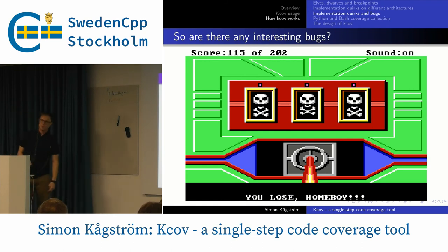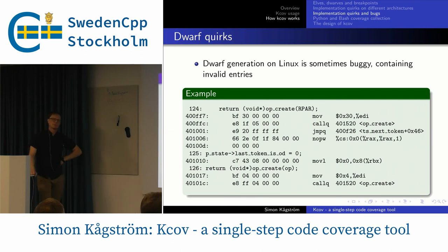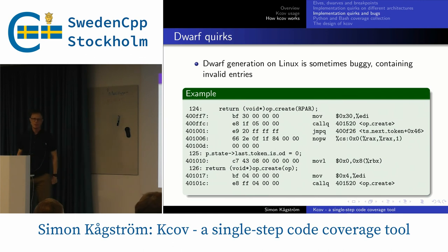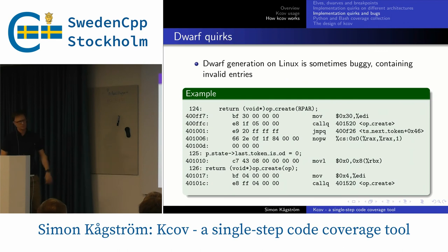Are there any interesting bugs affecting KCov? Yes, with setting breakpoints there are some interesting quirks. One thing is that the generation of DWARF debug information is sometimes buggy, and then the DWARF info will contain invalid entries. When you're using a normal debugger, you typically will never see this, but because KCov sets breakpoints everywhere, you will detect some of this stuff.